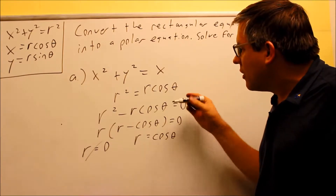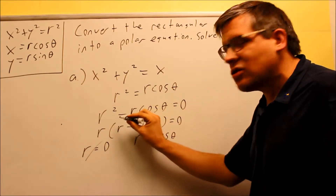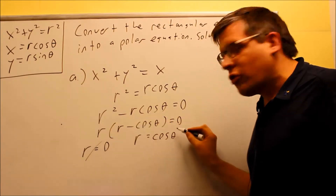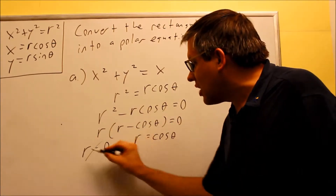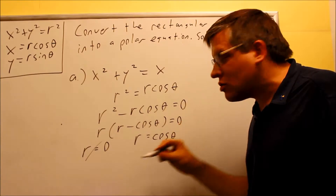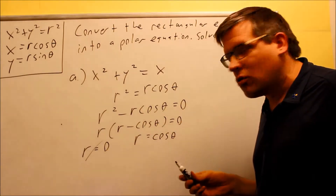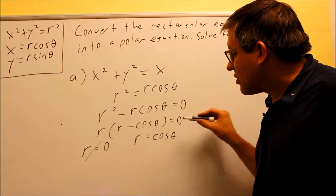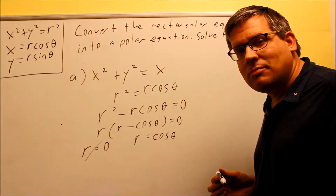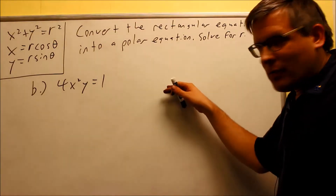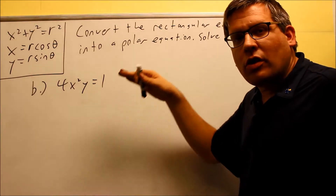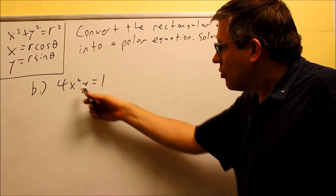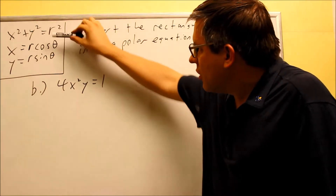The correct procedure is to bring the term across the equal sign, factor out the r, and set both factors equal to zero. Any time you get r equals zero when solving these, you can go ahead and ignore that answer. So the final answer for part A is r equals cosine theta. For part B, again the idea is to get rid of the x's and y's and replace them with r's and thetas.